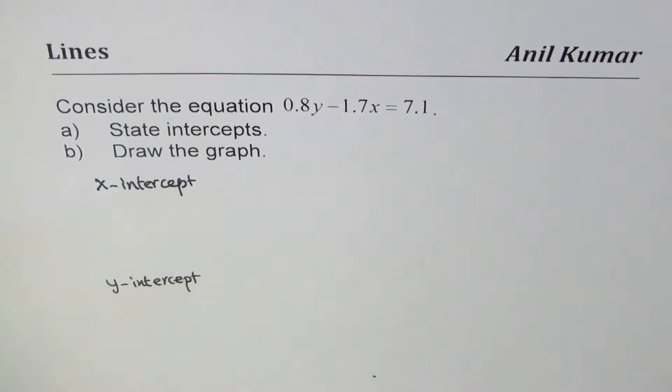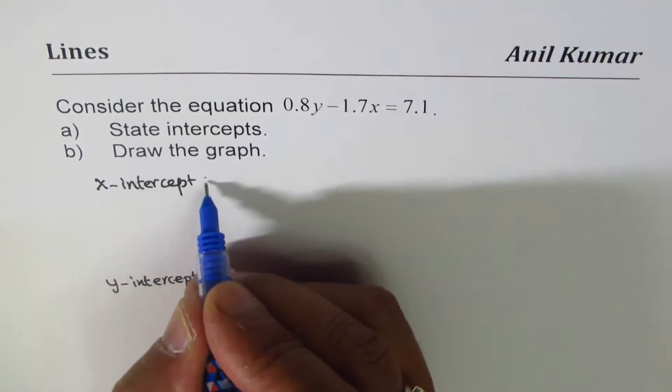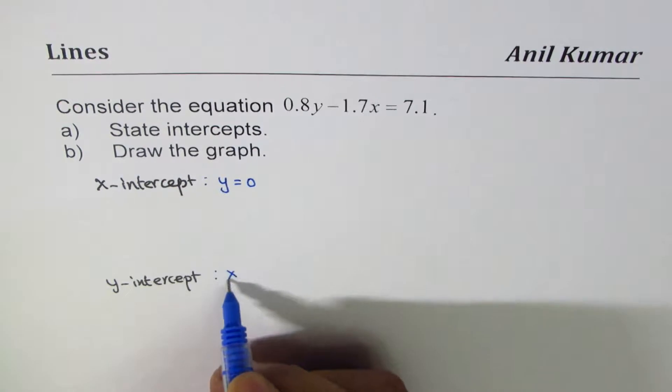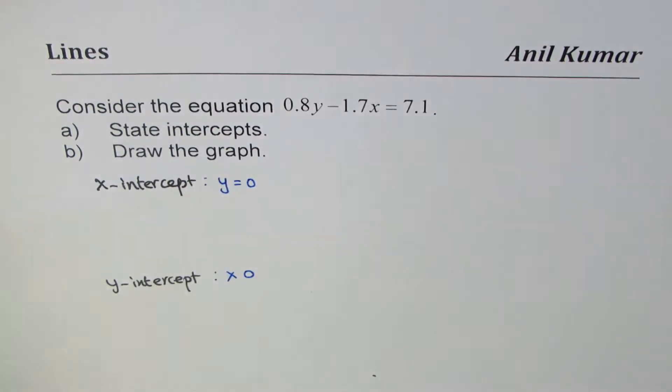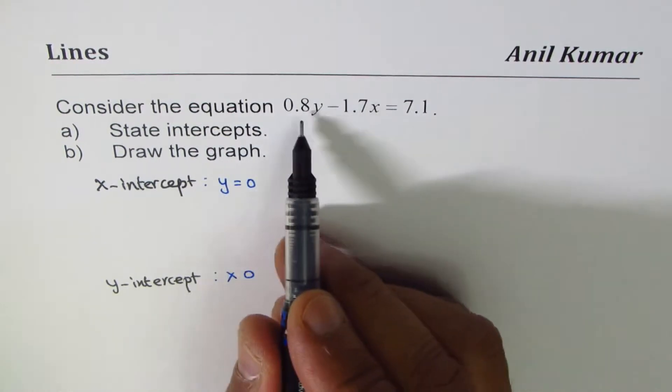What is x-intercept? At x-intercept, the value of y is 0. X-intercept means y equals 0, and y-intercept means x equals 0. To find these, we'll substitute the value of y as 0 in the equation to find the x-intercept.